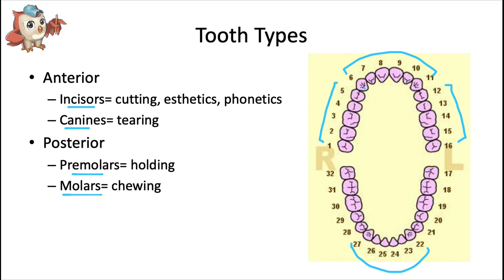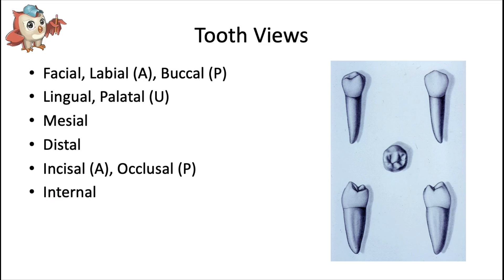Topics like tooth numbering and eruption dates are covered in my basic dentistry video, so I won't go over them here. For tooth naming conventions in this series, we start with which arch — maxillary (upper) or mandibular (lower) — then whether it's on the right or left side, and finally what kind of tooth it is. For example, tooth number 8 is the maxillary right central incisor.